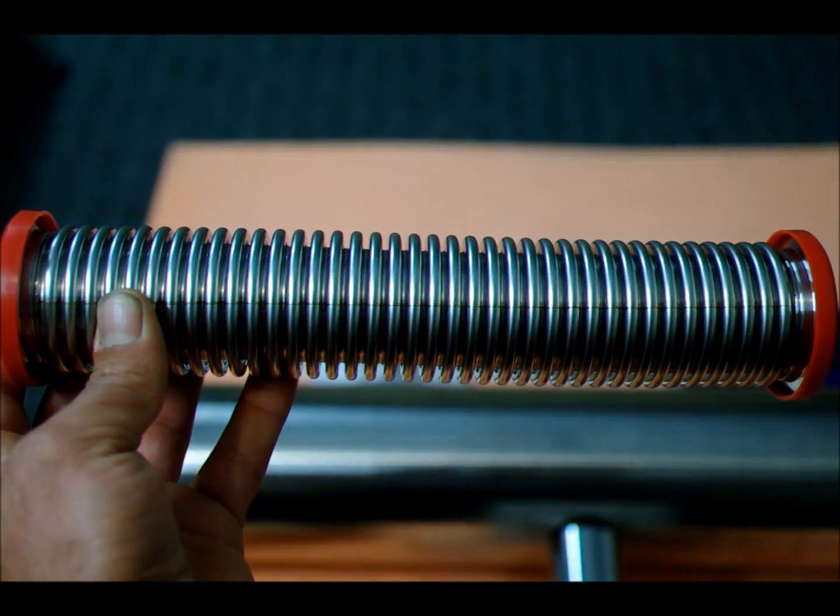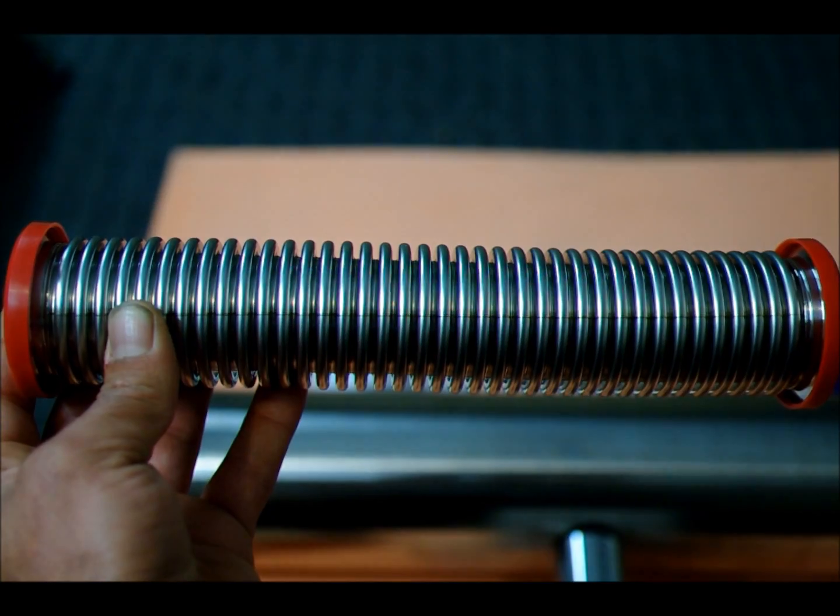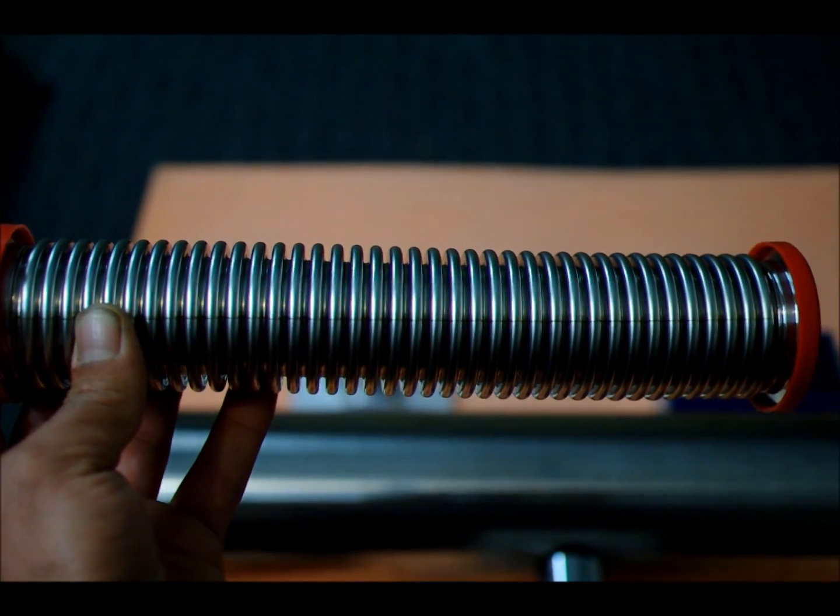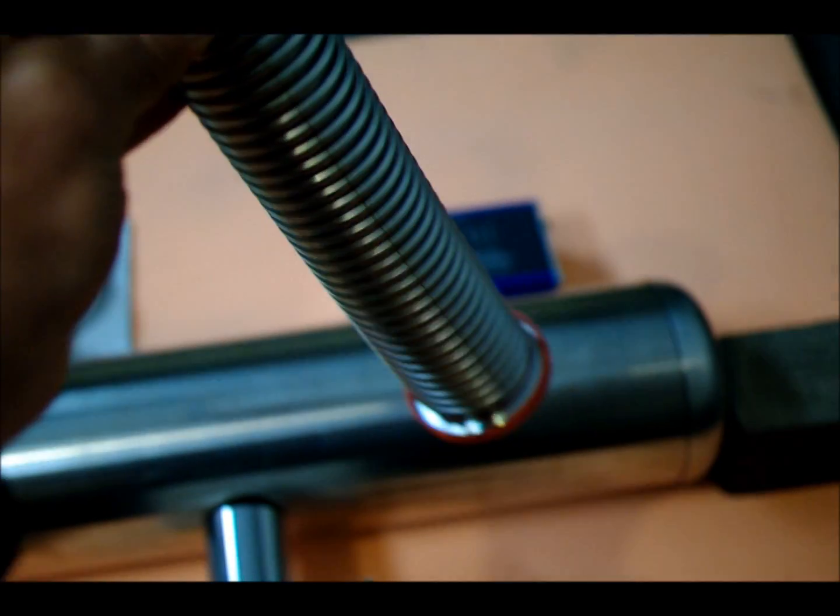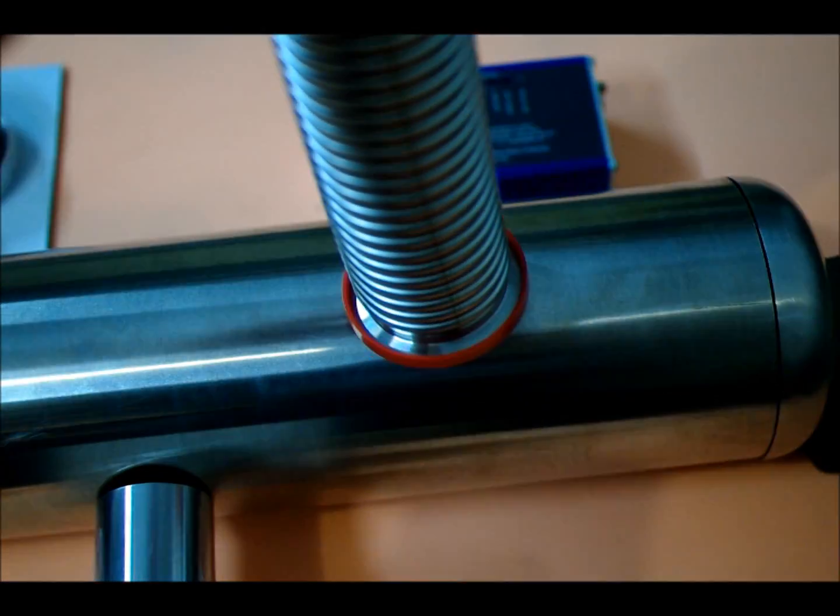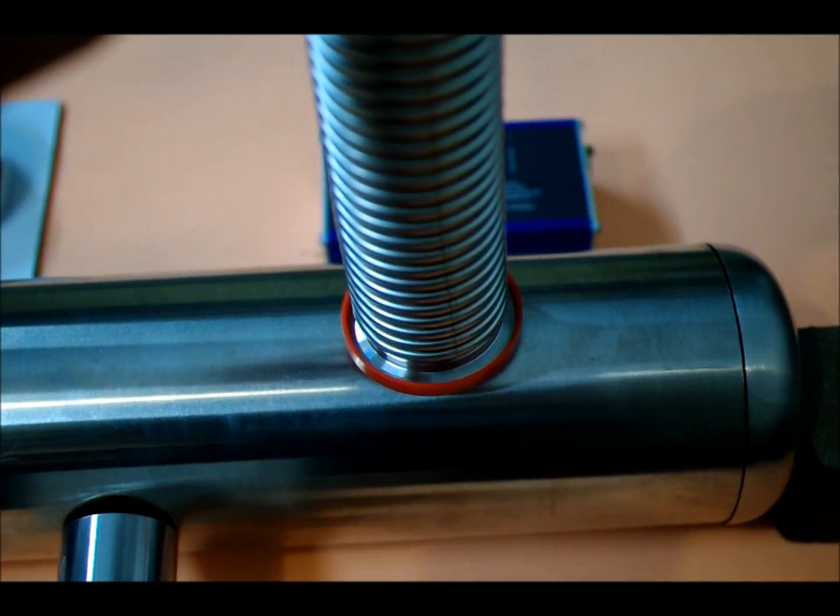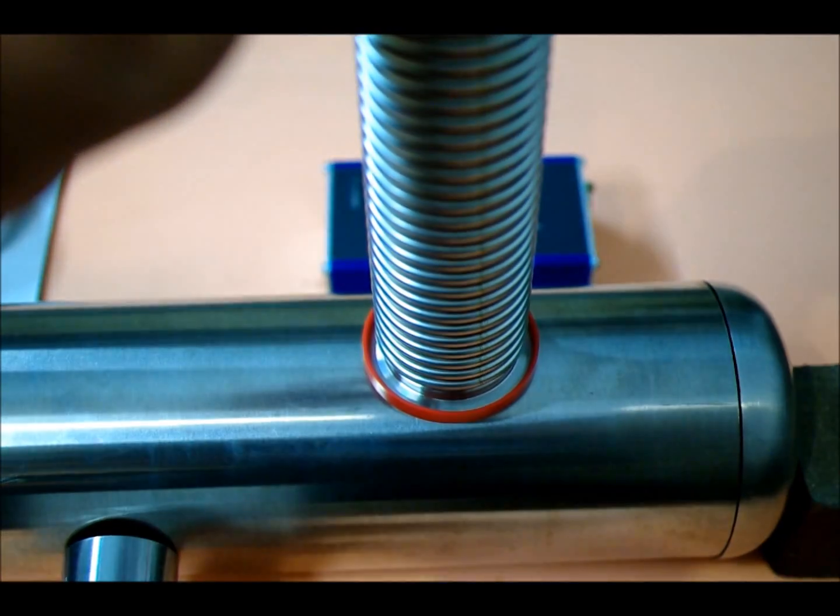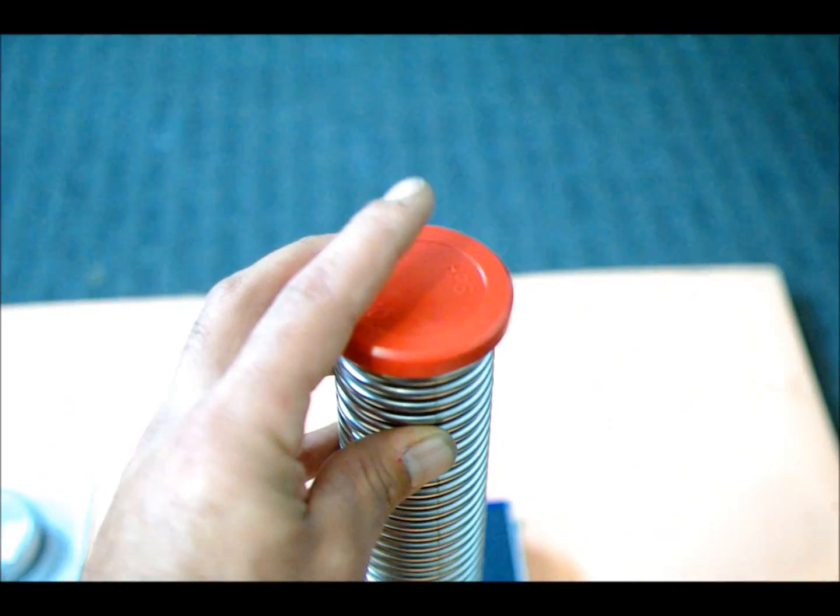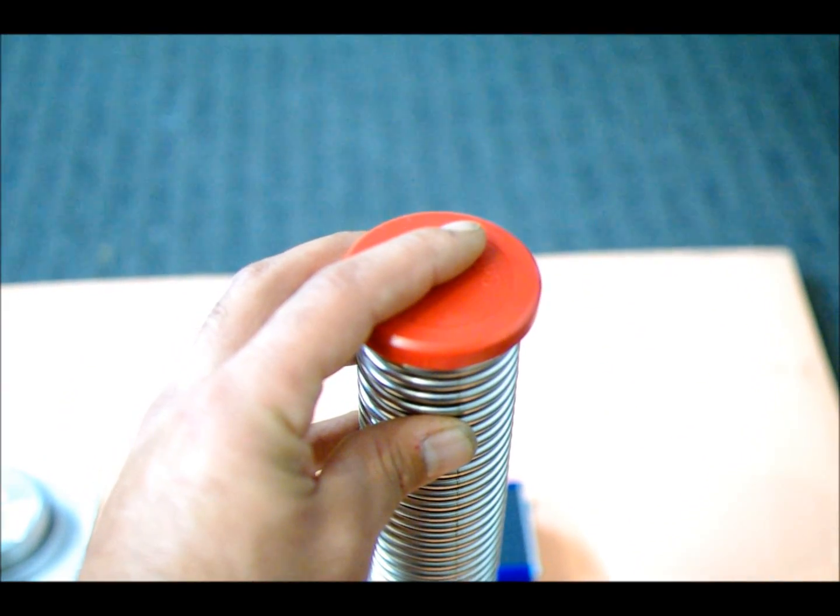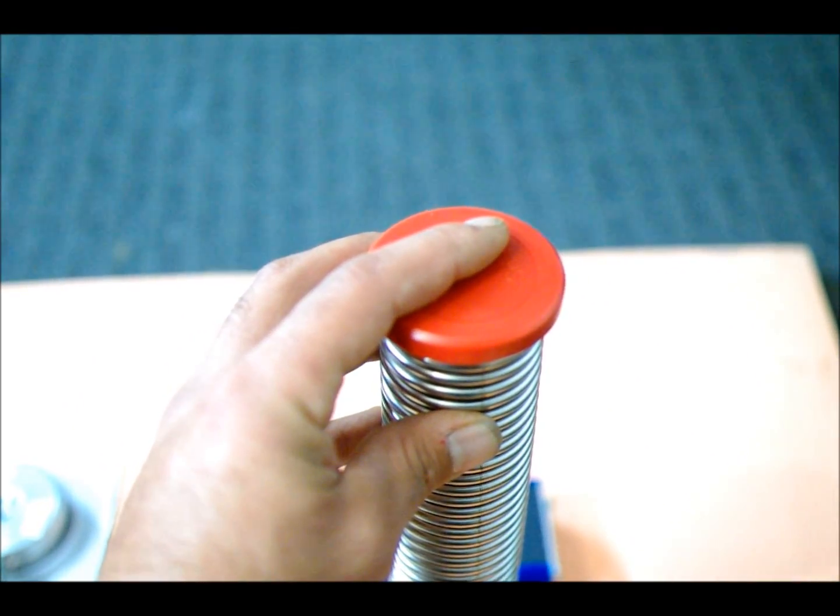You probably saw this hose sitting there and were wondering what this is about. This stainless steel hose will be connected to the KF40 port in the side here. This hose will be connected directly to the main chamber.